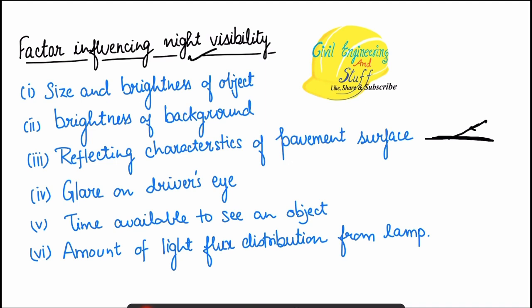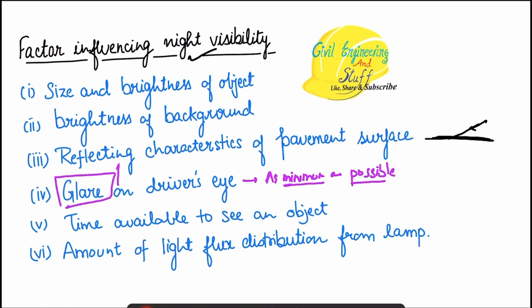We also need to take care of glare on the driver's side. The height of the pole should be set so that too much glare is not incident on the driver. We want to keep this glare as minimum as possible, because if the glare is high it will cause distraction to the driver.